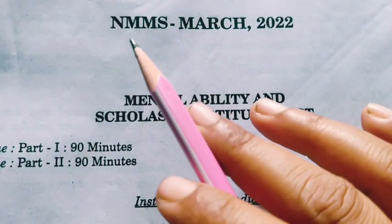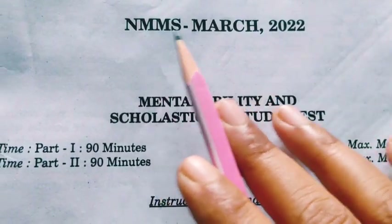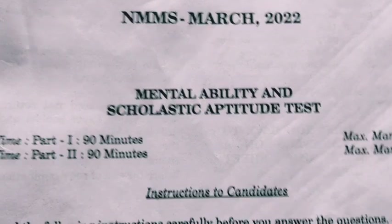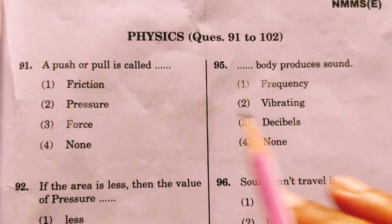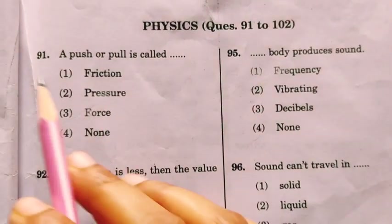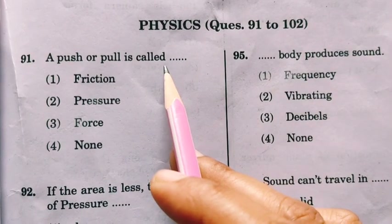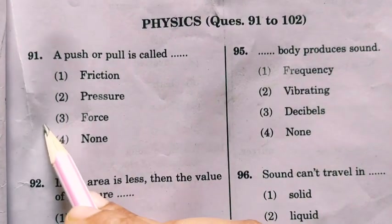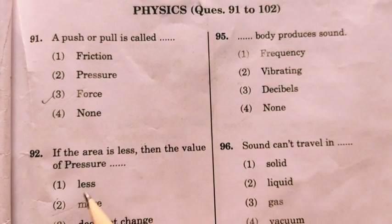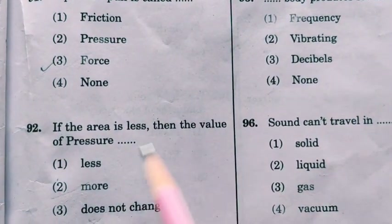Hello students, now we are going to discuss the key paper for NMMS March 2022. Firstly we will see the physics questions. Look at the first question: a push or pull is called as force. We can define force as a push or pull.